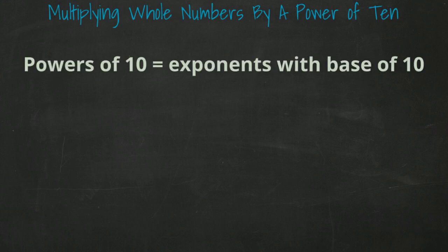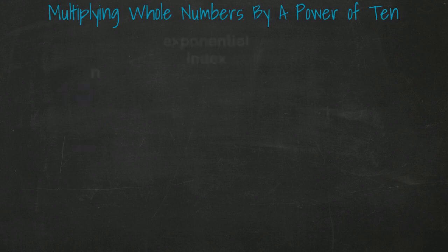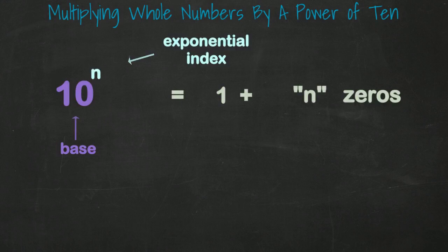A powers of 10 is a continuation of the topic of exponents. It is focused on exponents with the 10 as the base. When you have the base of 10 and an exponential index of n, the powers of 10 says the resulting number will be 1 followed by n number of zeros.